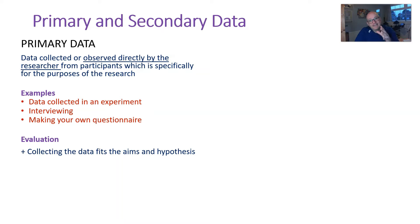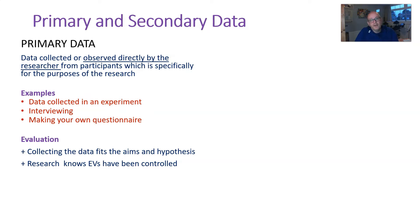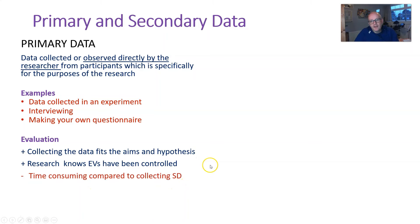What's good about primary data? The methodology and the data fits the aim of the research. If you're using primary data, you know you're collecting something that will support or reject your hypotheses. The researcher knows what's gone on, they know the methods, they know about the extraneous variables and how they've controlled them. Because of that, we can say the data has more validity — they know that x has caused a change in y because of the change in x, not because of an extraneous variable.